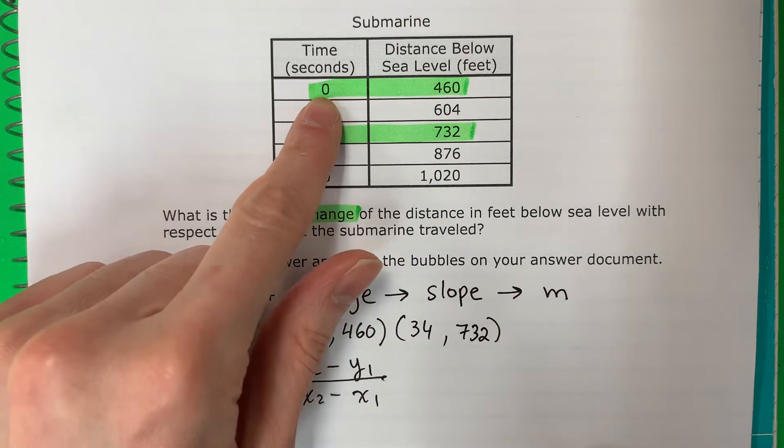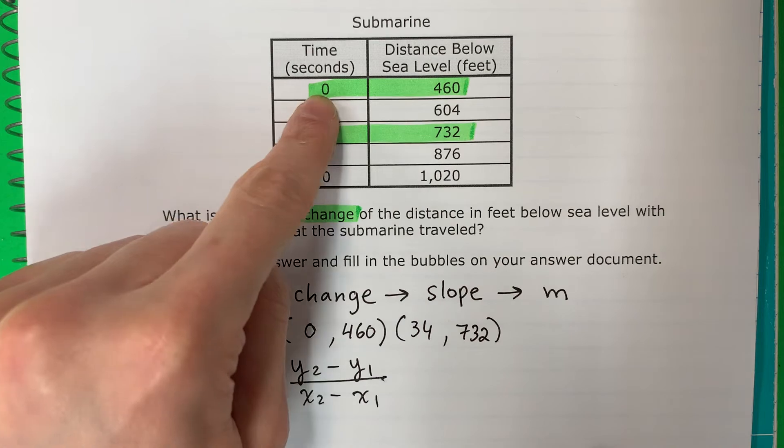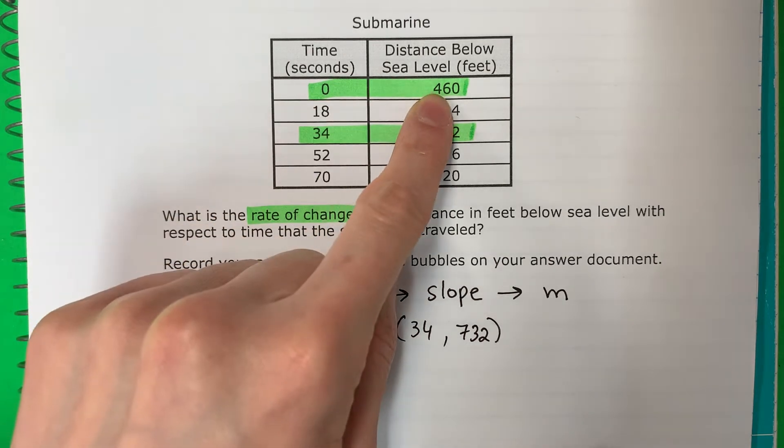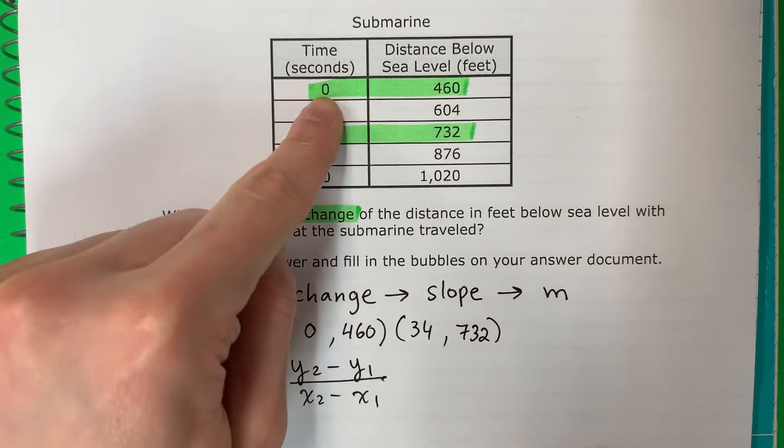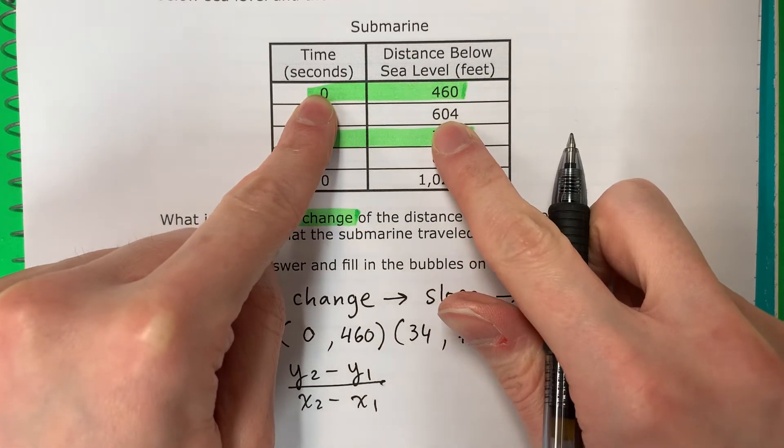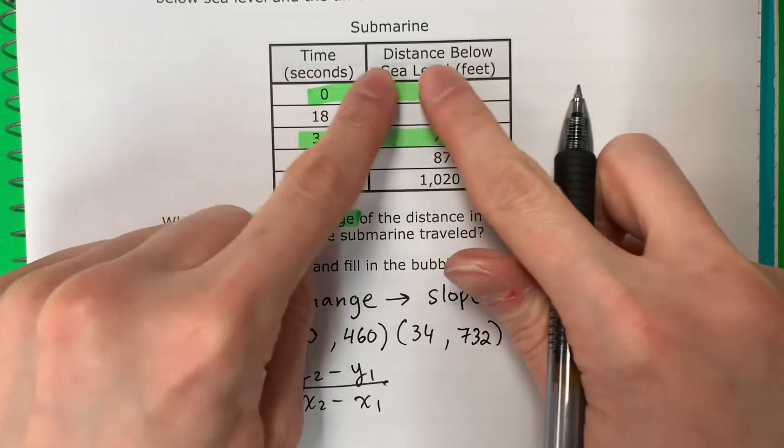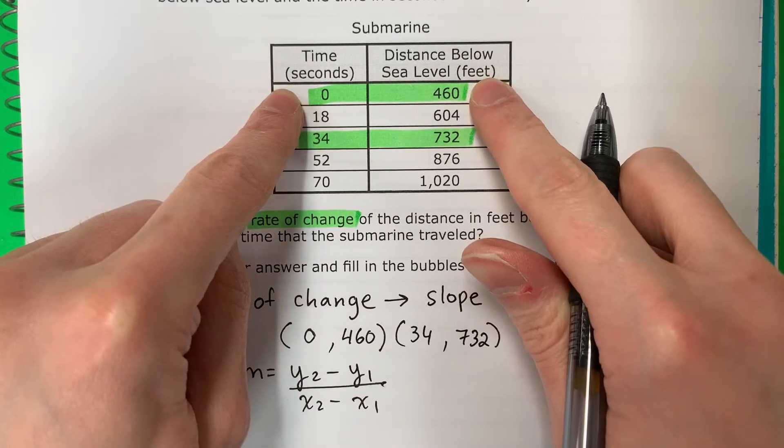Okay, now let me just say, if you use 0, you must use 460. Si quieren usar 0, deben que usar 460. You cannot do 0 and 604. No pueden usar 0 y 604. No, these are together. They are a collection. Están juntos y son como un colección.